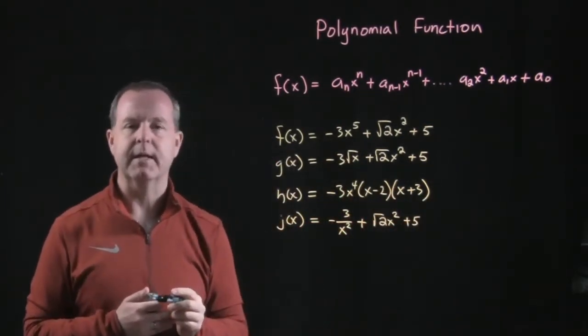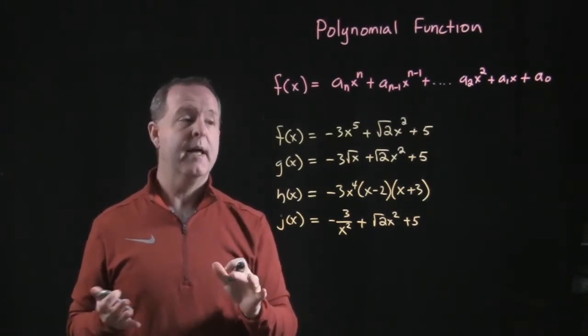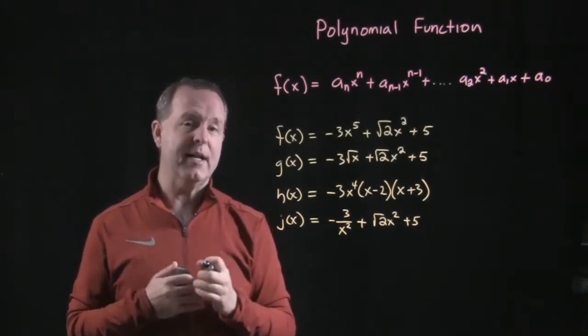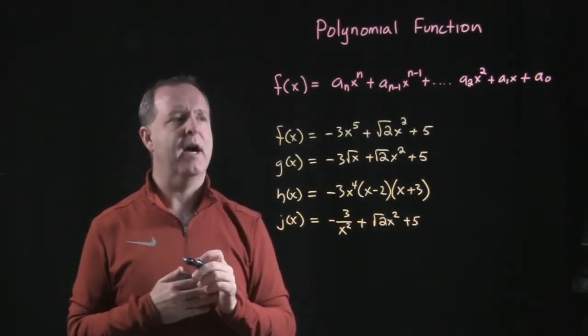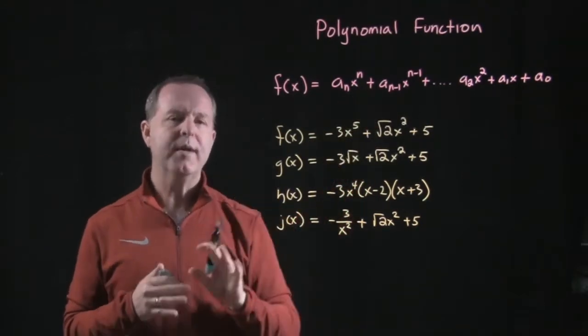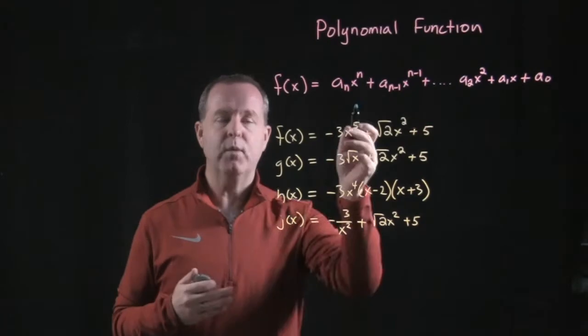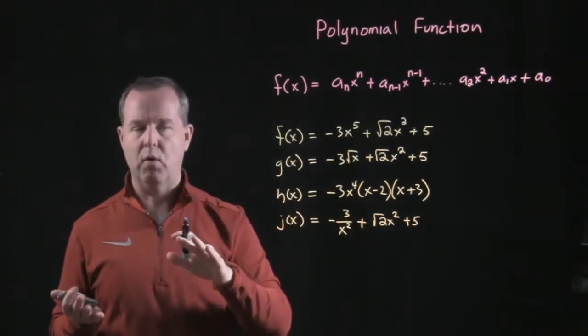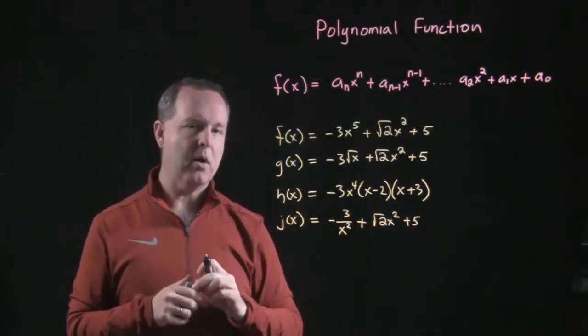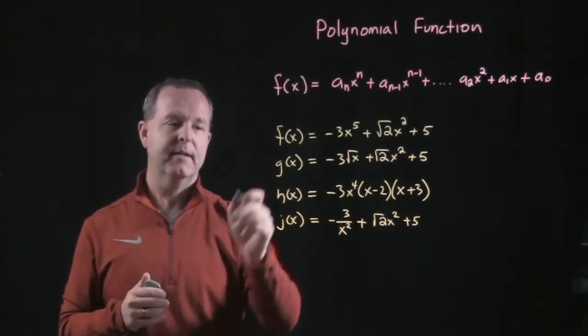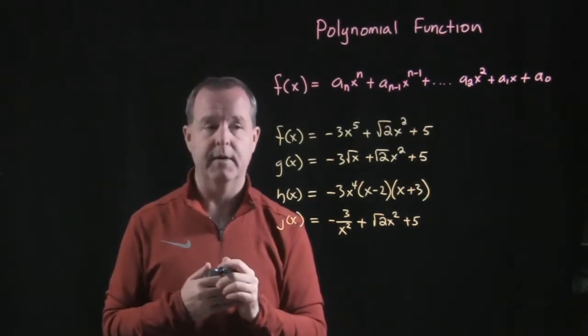So, I have four examples here of some functions that I want us to try to get an idea. Are they a polynomial function? And there's one more thing I guess I forgot too. These n's, we need to make sure they're non-negative integers. We don't want to have a negative exponent within a polynomial function. It'll still be a function, but not a polynomial function. So, based on that, I have four examples here, two of which are polynomial functions.